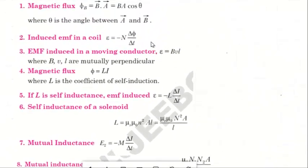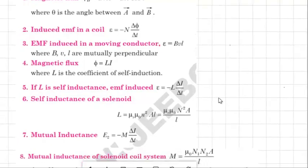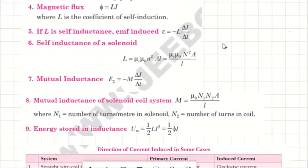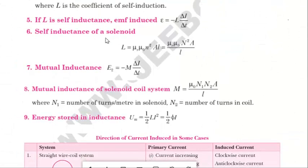So these formulas — E equals minus N into dφ/dt — and by substituting φ as LI, we can take L outside to get minus L into di/dt. If there are N turns in the coil, it becomes minus LN into di/dt. These are from Faraday's electromagnetic induction.